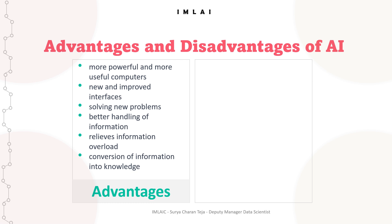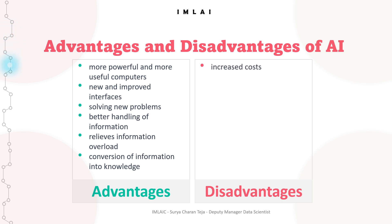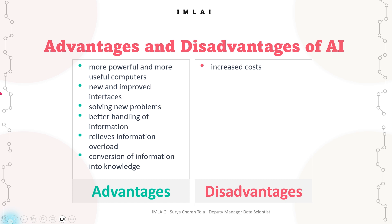Now it's time for disadvantages. The first one is the known disadvantage: increased costs. One major disadvantage of AI is that it can be expensive to develop and implement. This is because AI systems often require specialized hardware and software, as well as significant amounts of data to train algorithms.